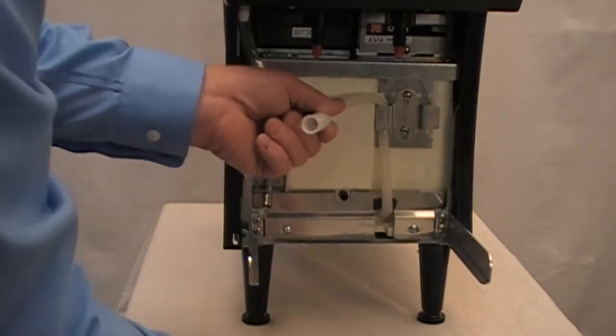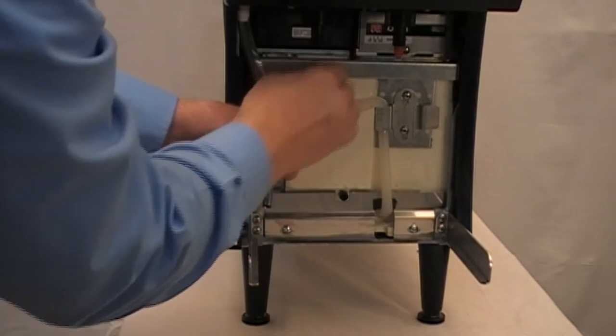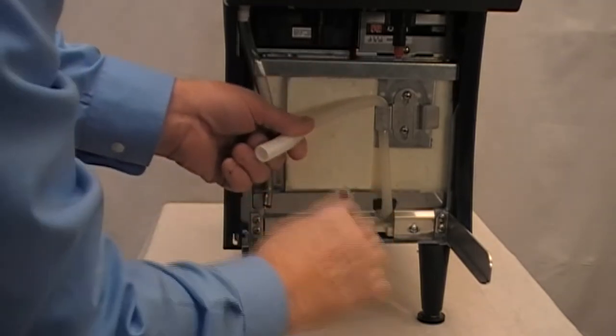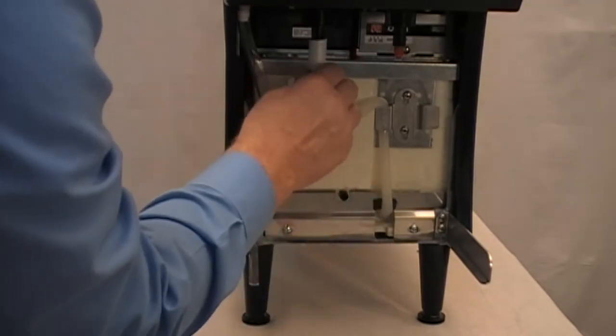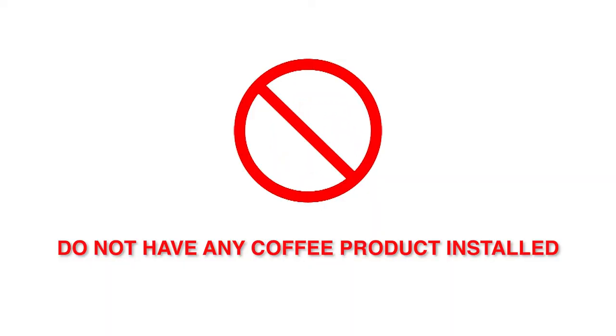It is important to not connect the tube to the right side nozzle, as this will unnecessarily power the onboard air compressor if the right side dispense is used. It is very important to not have any coffee product located and connected inside of the unit cabinet at this point of the installation.